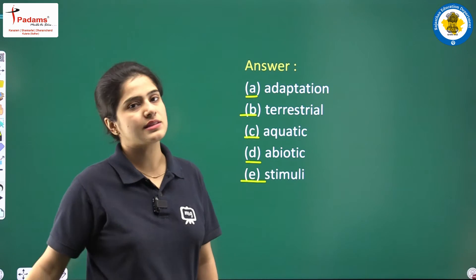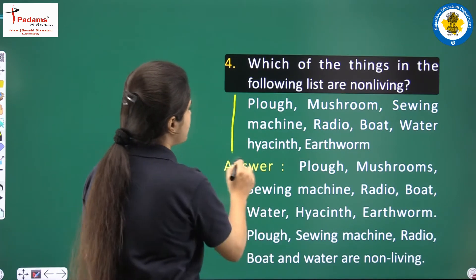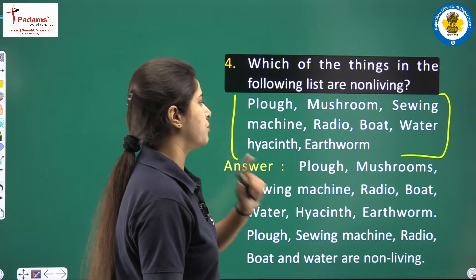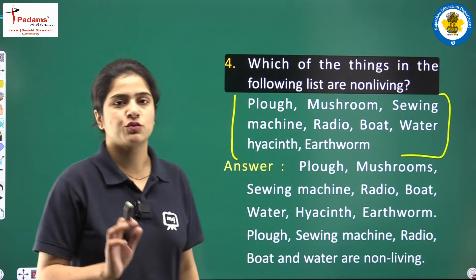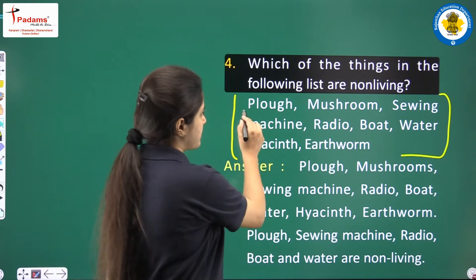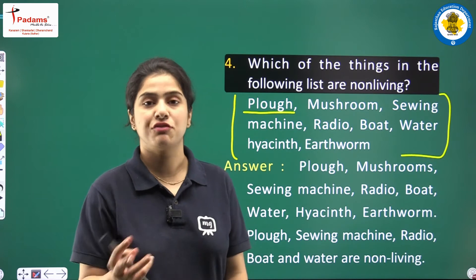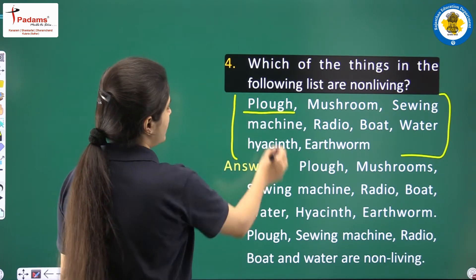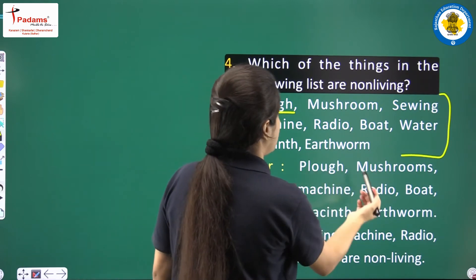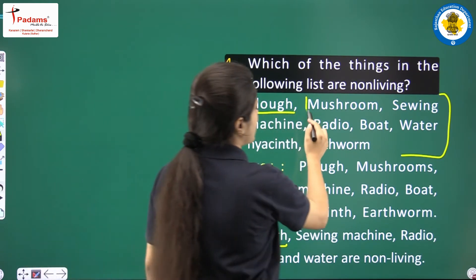Looking at the next question: which of the things in the following list are non-living? The list includes plough, mushroom, sewing machine, radio, boat, water hyacinth and earthworm. The plough is an instrument used in the irrigation process for crop growth — it is a non-living thing. Mushroom is a vegetable and is a living thing. Sewing machine is non-living. Radio used for telecommunications is also non-living. Boat used for travelling is also non-living. Water is an abiotic factor — it is non-living.